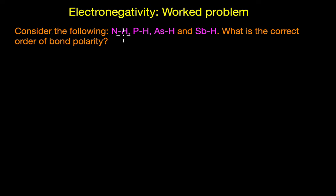Let's look at the next question. We are asked to consider the following: N-H, P-H, As-H and Sb-H bonds. The question is: what is the correct order of bond polarity? Bond polarity refers to the unequal sharing of electrons between two atoms in a covalent bond, and the magnitude of this unequal sharing is determined by the difference in the electronegativity. That is, bond polarity is proportional to delta EN. Greater the difference in the electronegativity between the two atoms, more polar the bond will be.